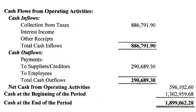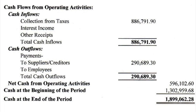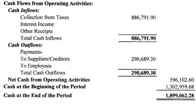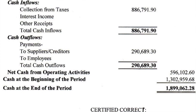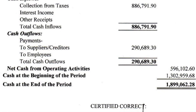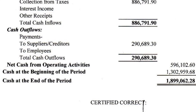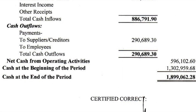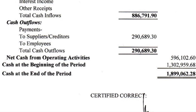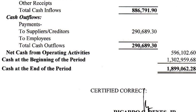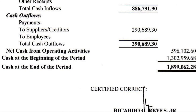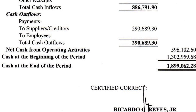By looking at the cash flow from operating activities, you can see how well a company is doing from their core business activities. A negative cash flow from operating activities is a bad thing because it shows that the company is losing money from its core business.